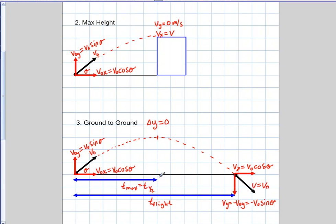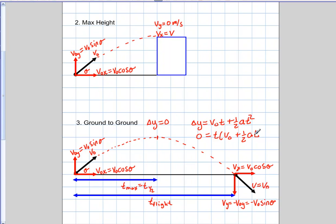You can immediately begin solving many nice problems. When you use the delta Y equation — delta Y equals V₀T plus one half AT squared — you notice you have a quadratic. But if delta Y is zero, you can immediately factor out a time, eliminating one variable without needing to fully solve the quadratic. That makes the equation much easier to work with.